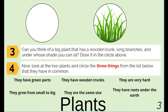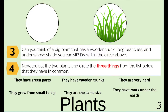Once you're done with the animals section, let's go to the bottom here, to plants, to number three. Number three says: can you think of a big plant that has a wooden trunk, long branches, and under whose shade you can sit? Draw it in the circle above.